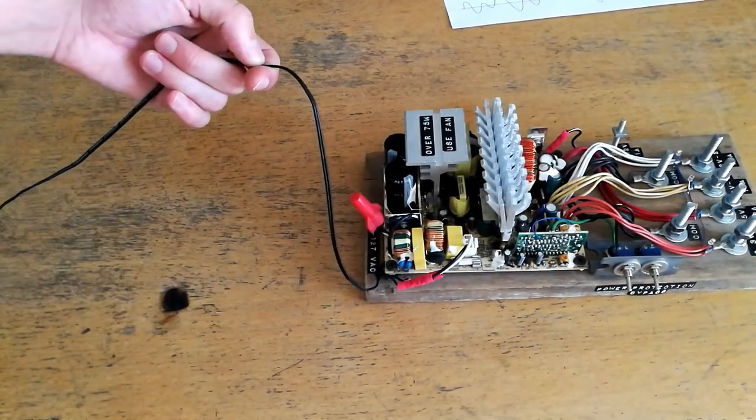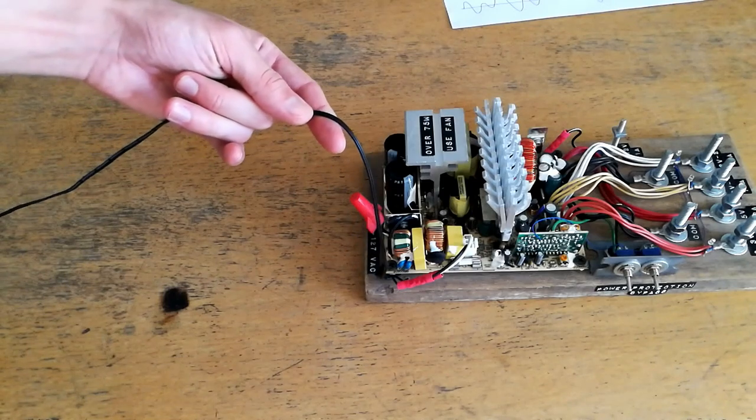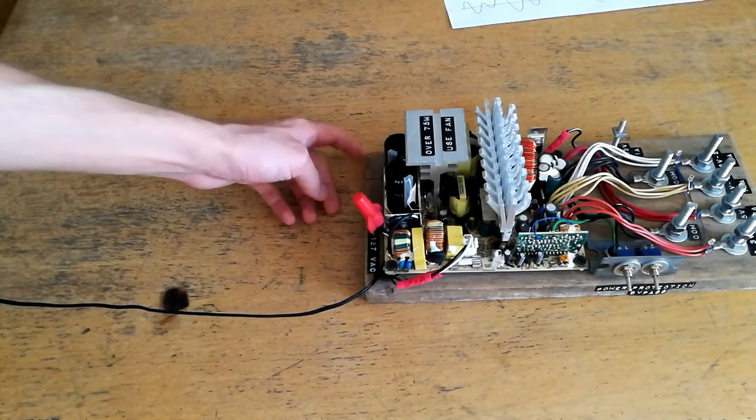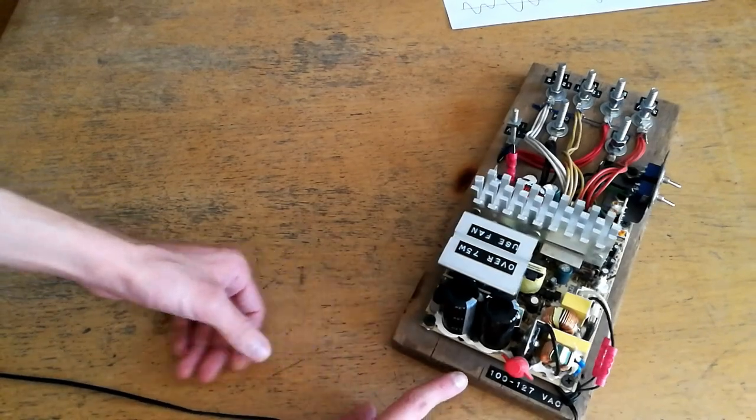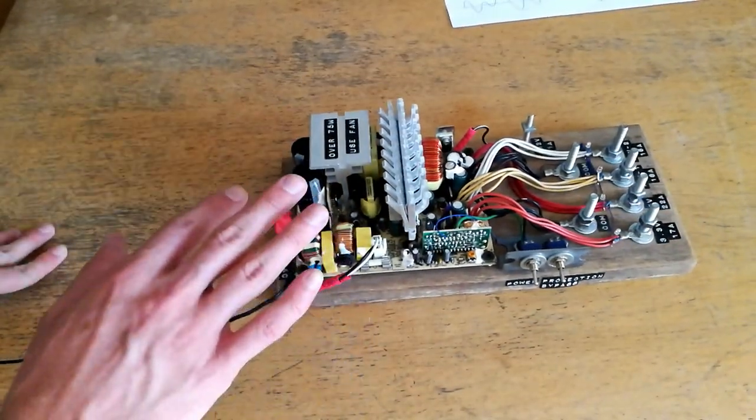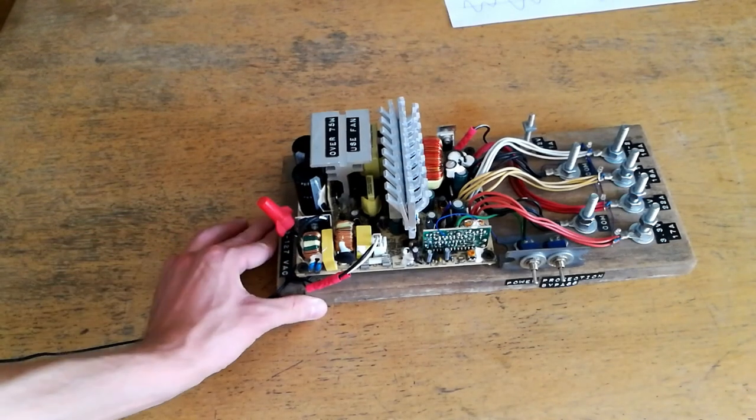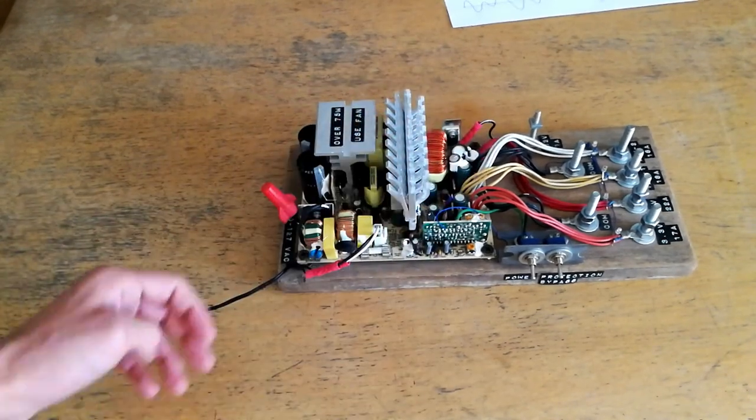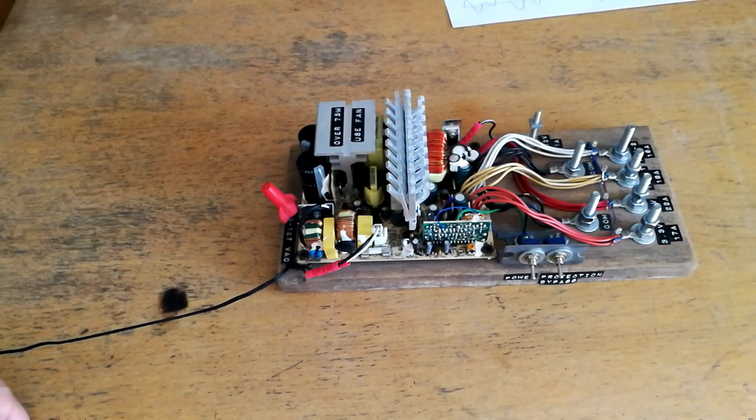So how does it work? We have AC power coming in, in this case at 120 volts AC. The input range rating for this power supply is 100 to 127 volts AC. And that allows for a substantial variation in the line voltage while still providing full output current and satisfactory voltage regulation at the output.